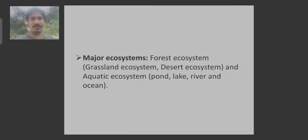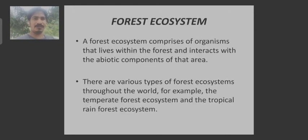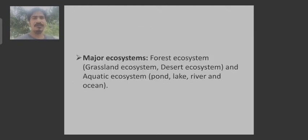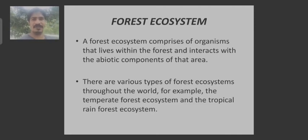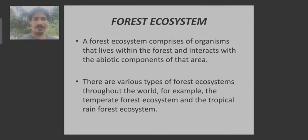Let us go through some major ecosystems of the world. Forest ecosystem — we will be dealing about the forest ecosystem and the pond ecosystem. Forest ecosystem comprises living organisms and the non-living entities found in a forest area. There are various types of forest ecosystems: for example, temperate forest ecosystem, tropical forest ecosystem, tropical deciduous forest ecosystem, and so on.